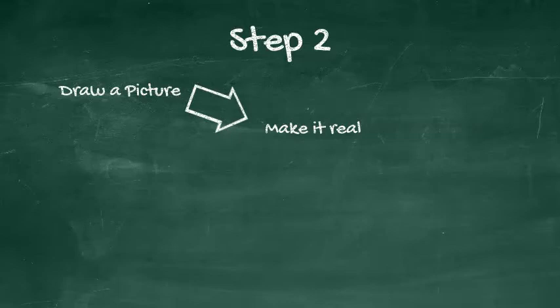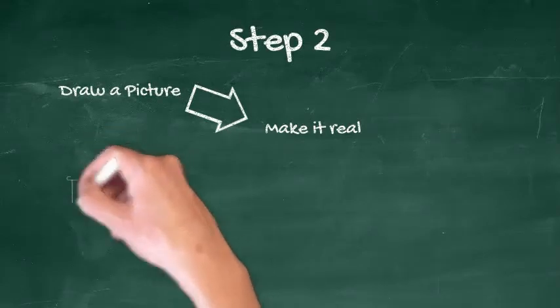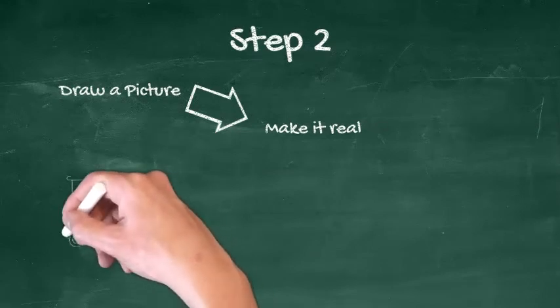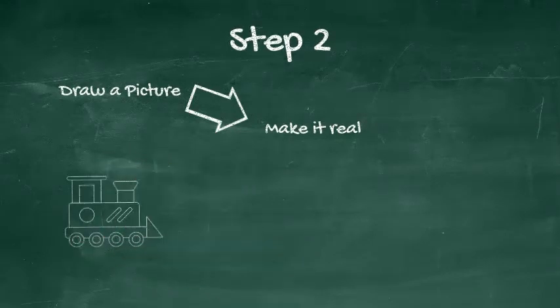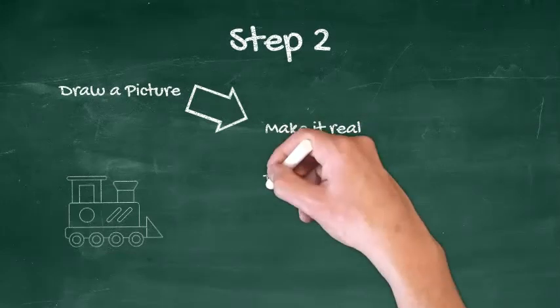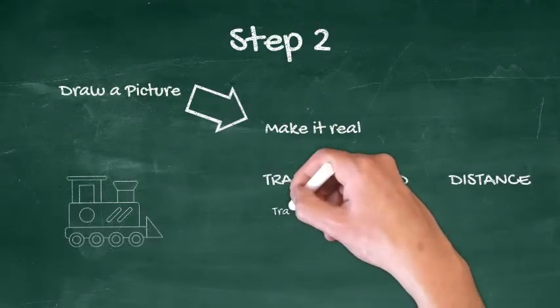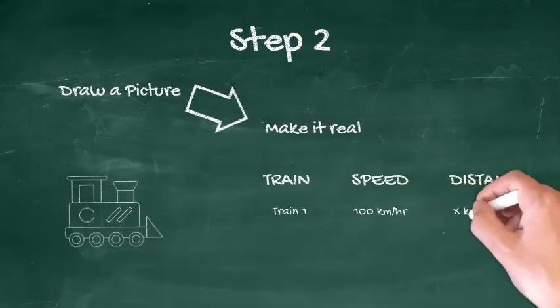A favorite word problem is something like one train leaves station A traveling at 100 kilometers per hour and another train leaves station B traveling at 60 kilometers per hour. Draw a line, the two stations, and the two trains at either end. Depending on the question, make a table with a blank portion to show information you don't know.